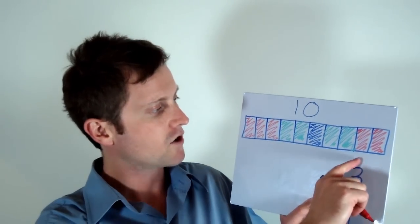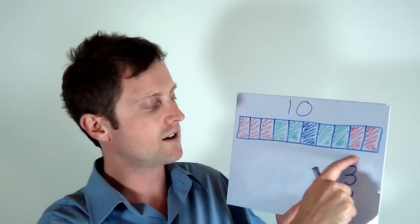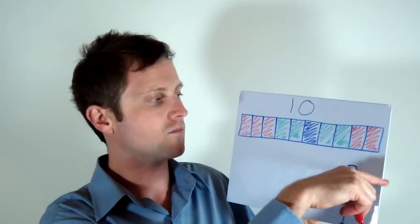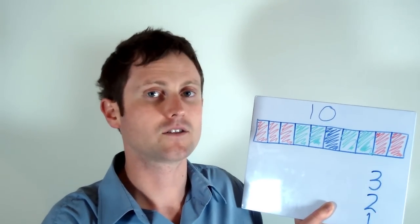Now you can't go over the number. For example if there were only two boxes left I couldn't choose a 3 because it would be going over the 10 and you can't really do that.